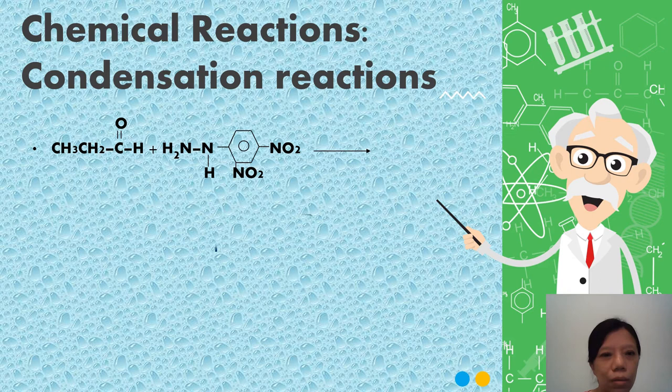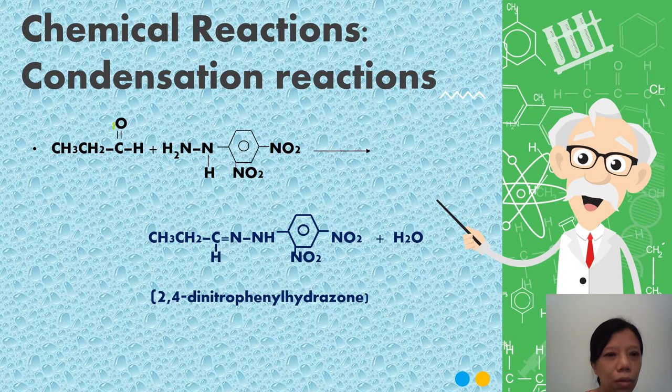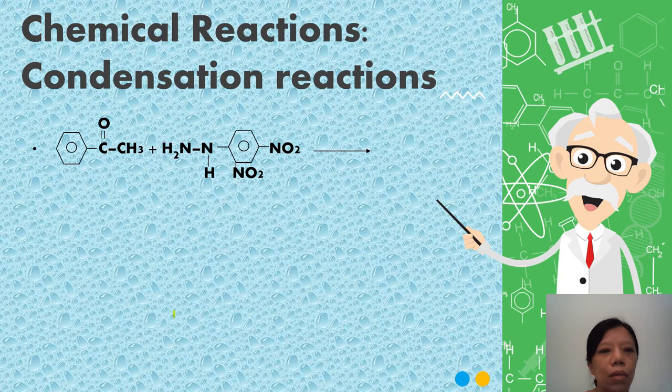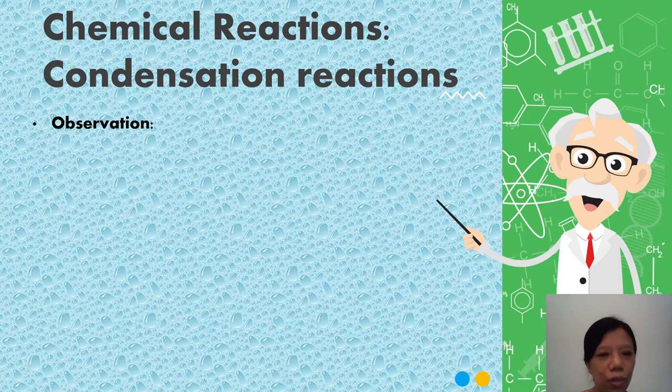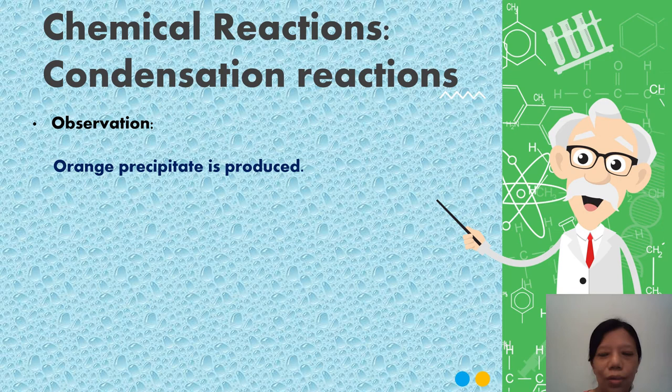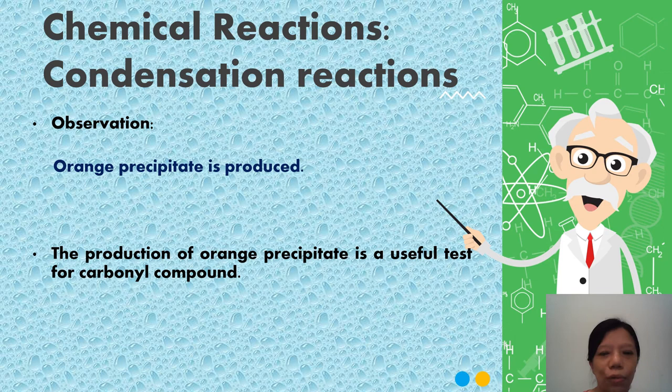Another example. This is aldehyde, this is ketone. Again, you remove the water, then join up. Carbon joins up with this nitrogen. You will get 2,4-dinitrophenylhydrazone. One more example: remove water, one joins up here, another one joins up with the hydrogen. The observation is orange precipitate forms. This is a useful test for carbonyl compounds.